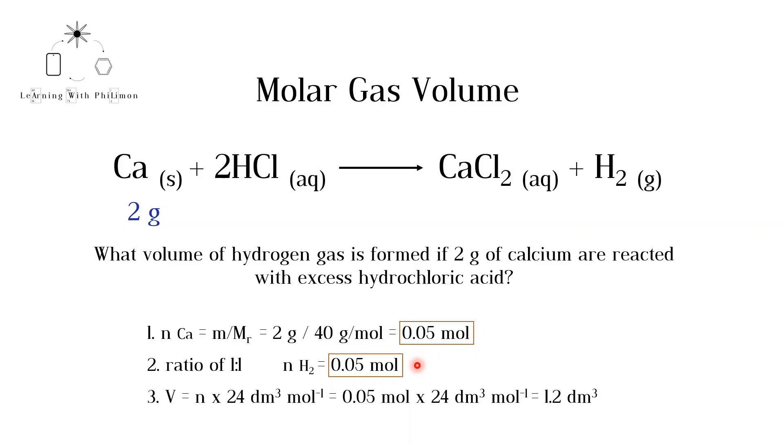In the final step, we can calculate the volume of hydrogen gas using the equation V is equal to N multiplied by 24 decimeters cubed per mole. Multiplying 0.05 by 24, we get 1.2 decimeters cubed. Therefore, 2 grams of calcium produce 1.2 decimeters cubed of hydrogen gas.